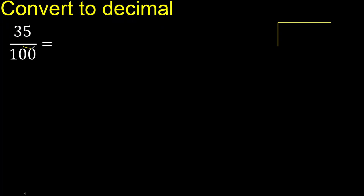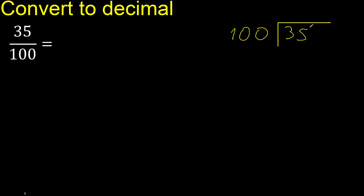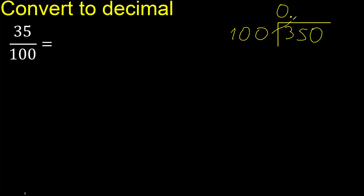35 divided by 100: 35 is less than 100, therefore complete. Always complete with 0. Here, 0 point. 100 multiplied by which number is nearest to 350?